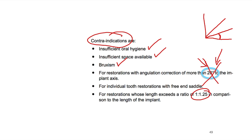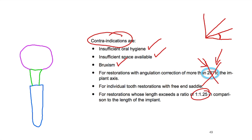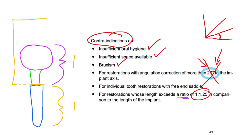Also contraindicated: individual tooth restorations with a free-end saddle — that's a cantilever hanging off the end — and restorations whose length exceeds a ratio of 1 to 1.25 compared to the length of the implant. So if your implant is this long and the crown plus abutment is longer, you're starting to violate that ratio. It's all about torque — all that torque ends up at the interface and can cause issues for the implant, the TyBase, and the ceramic. Pay special attention to these indications and contraindications.